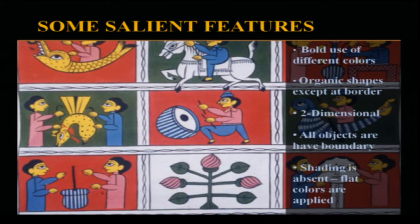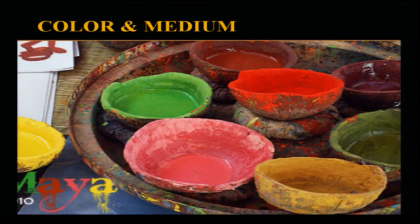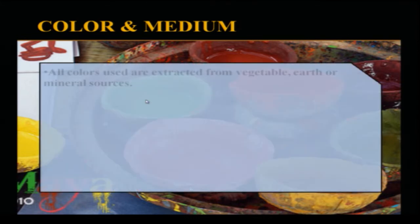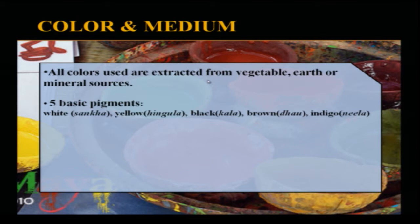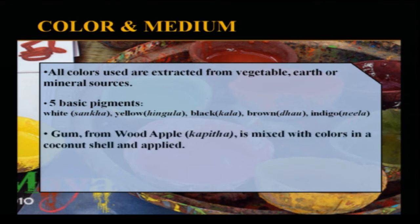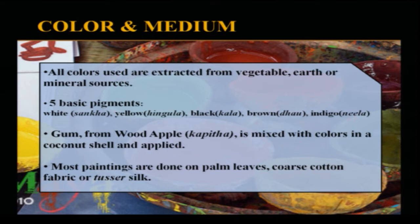They use colors flatly, although they mix colors from five or six basic pigments. All colors are extracted from natural sources — traditionally no artificial colors are used. They are extracted from vegetable, earth, or mineral sources. The five basic pigments are: white or sankha, yellow or hingola, black or kala, brown or dhau, and indigo or neela. The gum obtained from wood apple or the kapitha tree is mixed with the colors in a coconut shell and applied to give a glossy effect and a protective coat. Most paintings are done on palm leaves, coarse cotton fabric, and tusser silk.